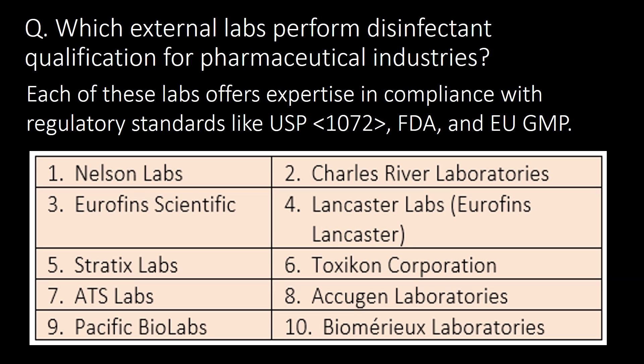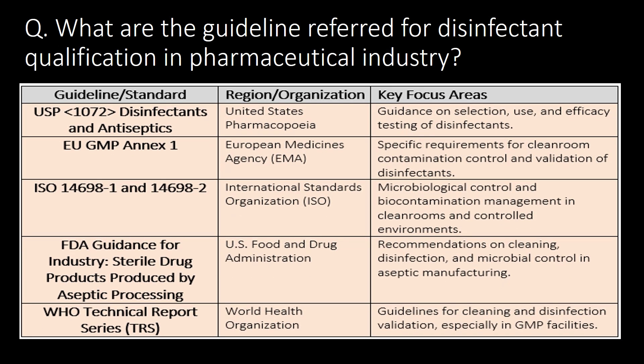Which external labs perform disinfectant qualification for pharmaceutical industries? Refer to the table below for external labs that perform disinfectant qualification for the pharma industry. These labs offer expertise in compliance with regulatory standards like USP Chapter 1072, FDA, and EU GMP. Annex 1, ISO standards 14698-1 and 14698-2, FDA guidance for industry, and WHO's Technical Report Series are the guidelines commonly referred to for disinfectant qualification in the pharma industry.